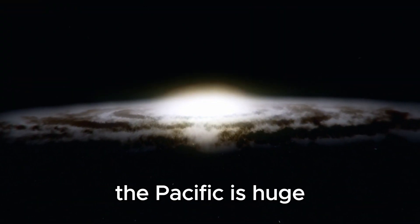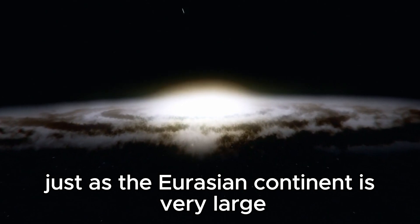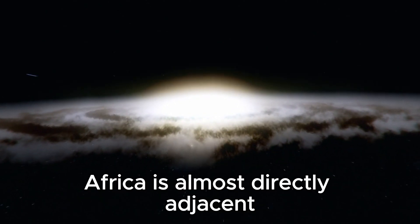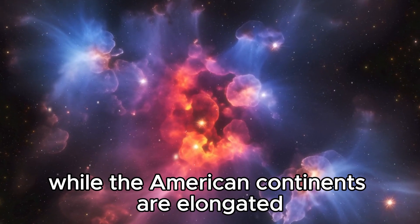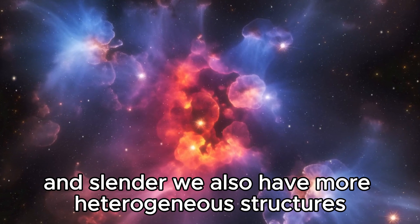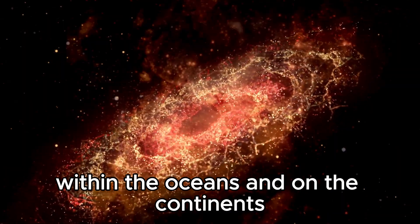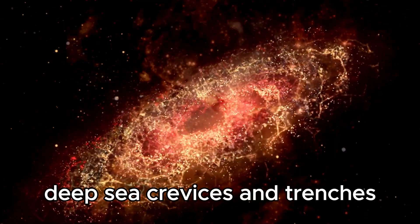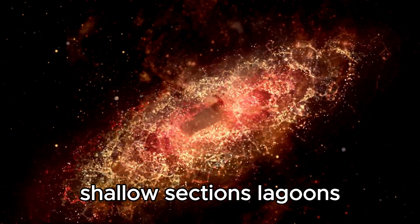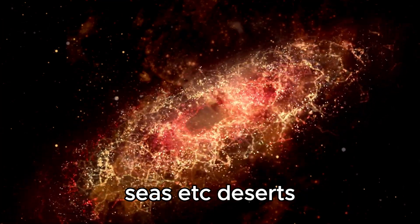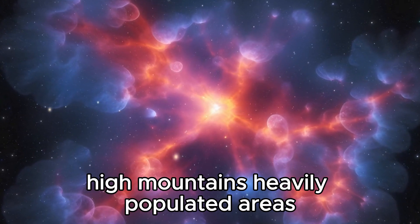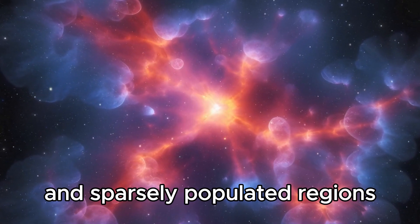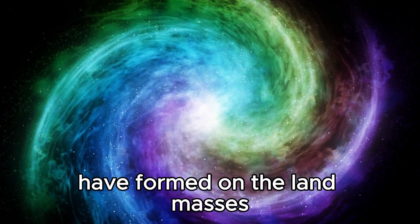The Pacific is huge, just as the Eurasian continent is very large. Africa is almost directly adjacent, while the American continents are elongated and slender. We also have more heterogeneous structures within the oceans and on the continents. Deep sea crevices and trenches, shallow sections, lagoons, seas, etc. Deserts, high mountains, heavily populated areas, and sparsely populated regions have formed on the land masses.